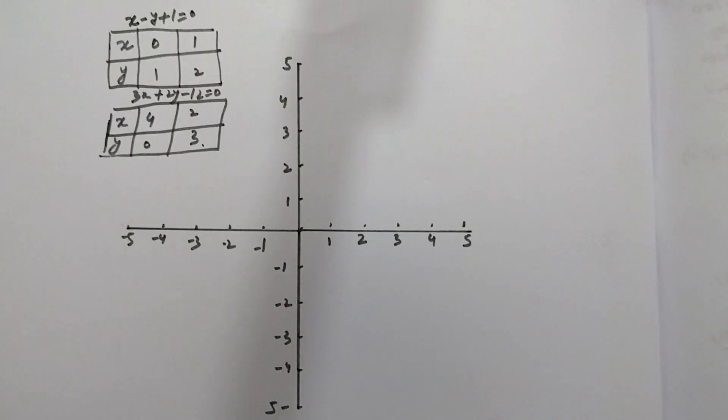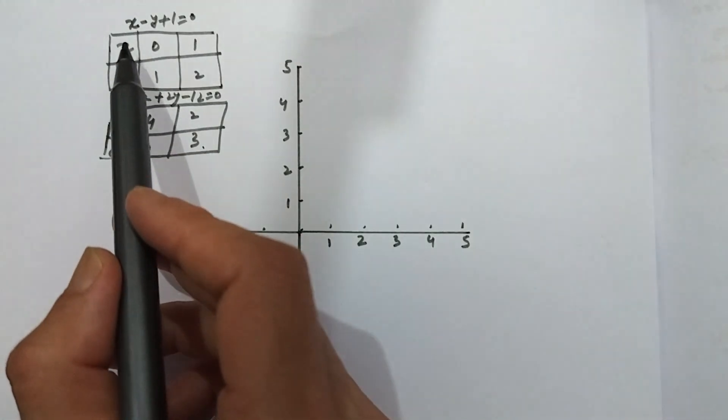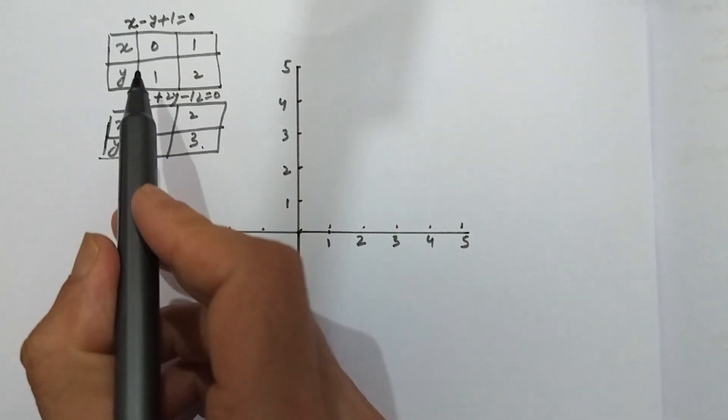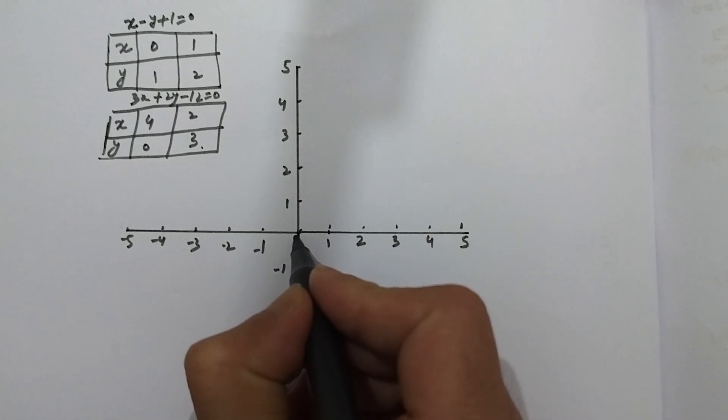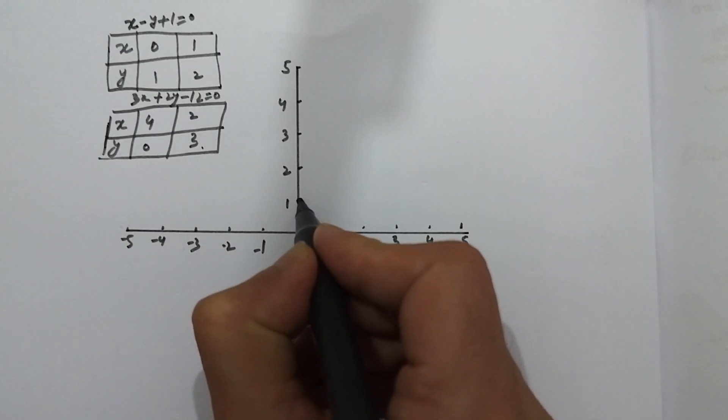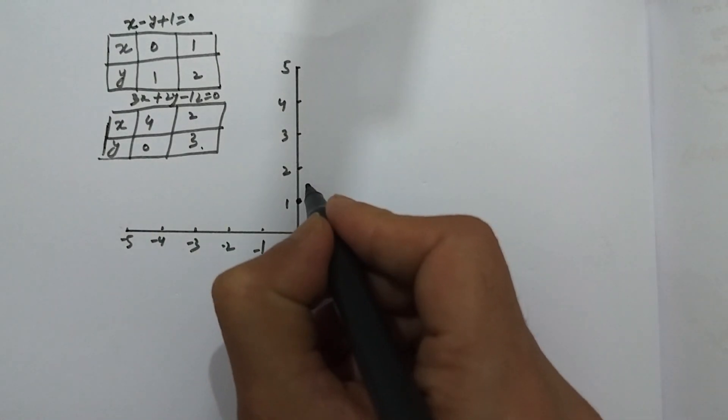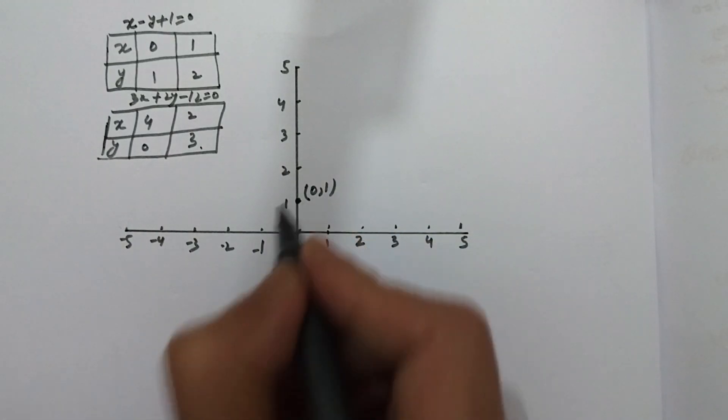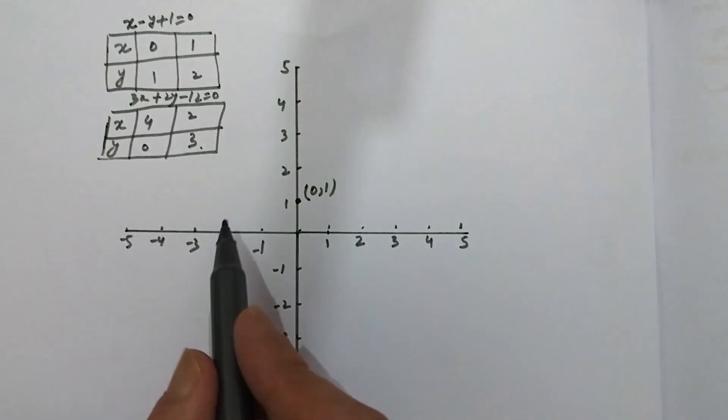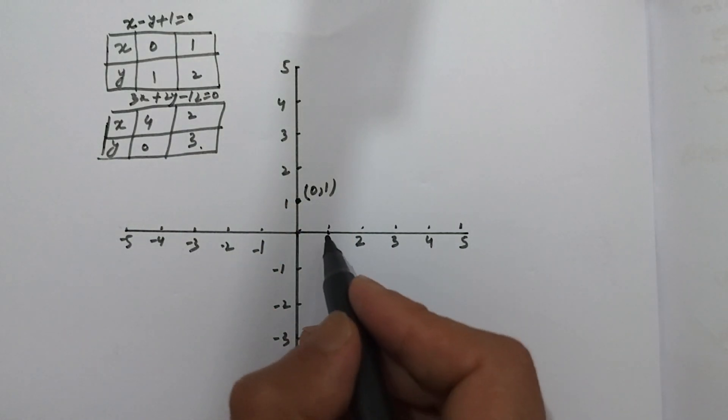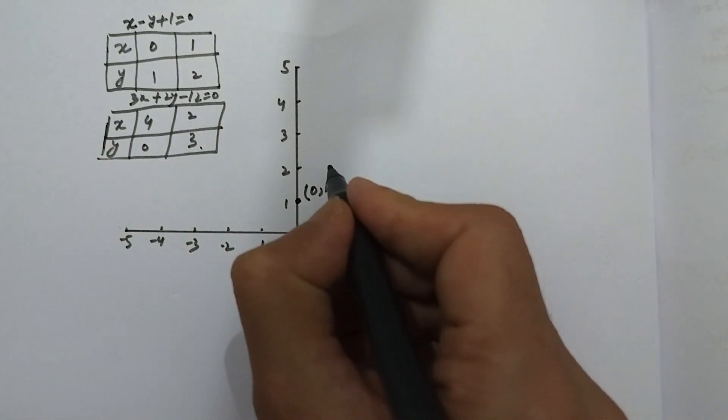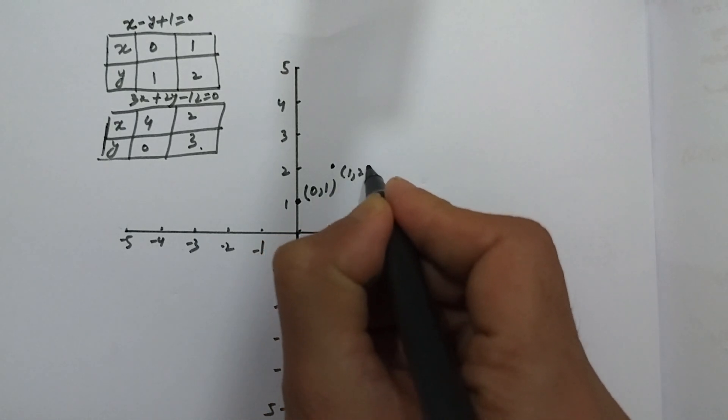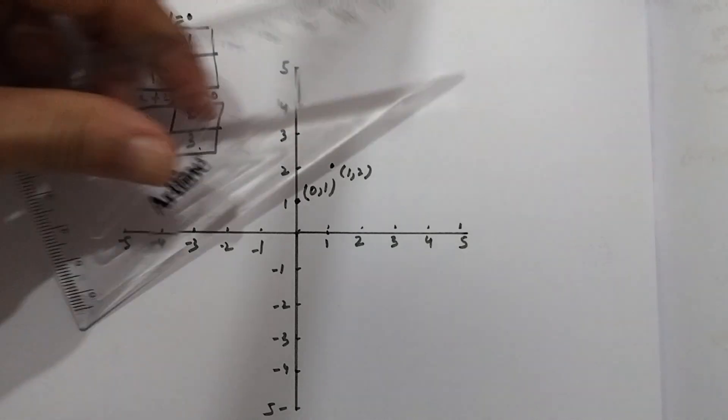Now I'll create a table of values for both equations. For the first equation: x is 0, y is 1; x is 1, y is 2. For the second equation: x is 4, y is 0; x is 2, y is 3. Now we are going to use these values to plot the lines.